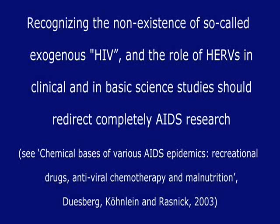Recognizing the non-existence of so-called HIV and the role of HERVs in clinical and basic science studies should definitely redirect AIDS research. And redirecting AIDS research could not be better done than by following the indication for the chemical causes of AIDS, which were so masterfully developed and explained in a paper by Dr. Duesberg, Kernlein, and Rasnik published in 2003. The future of AIDS research should obviously concentrate on the effects of drugs, the effects of antiretroviral medication, and on factors of nutrition. These new orientations would make therapy considerably cheaper and prevention extremely easy.